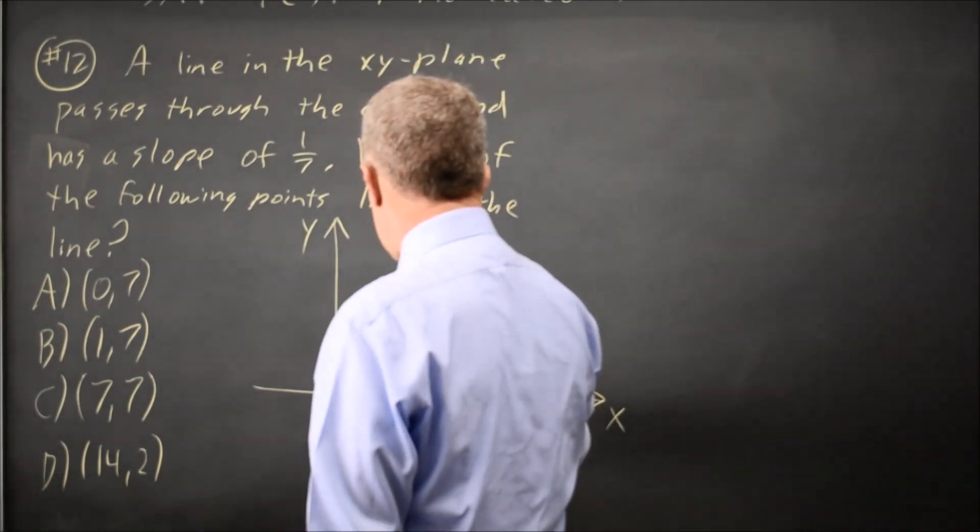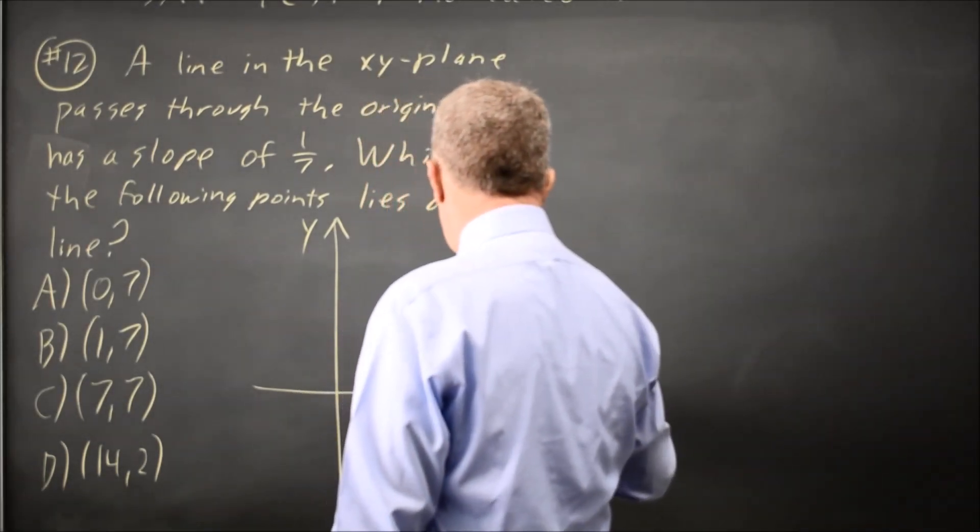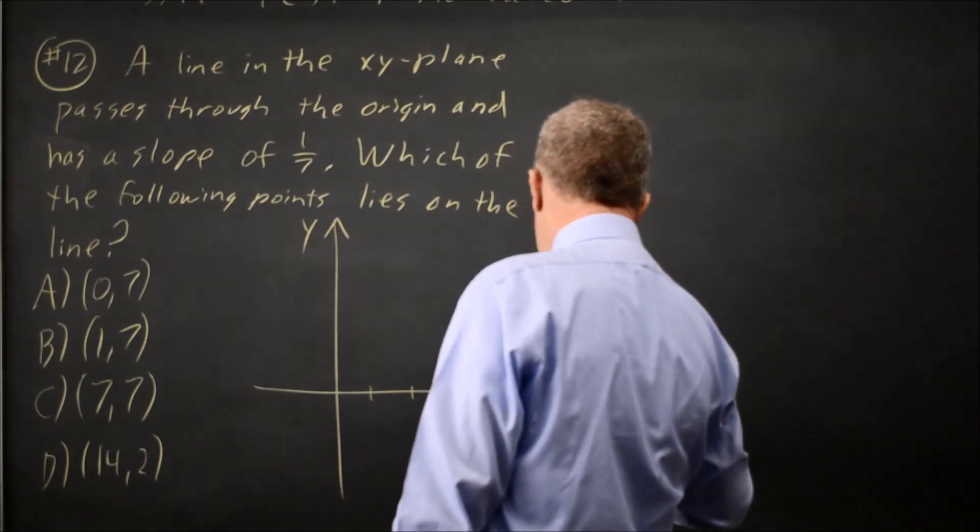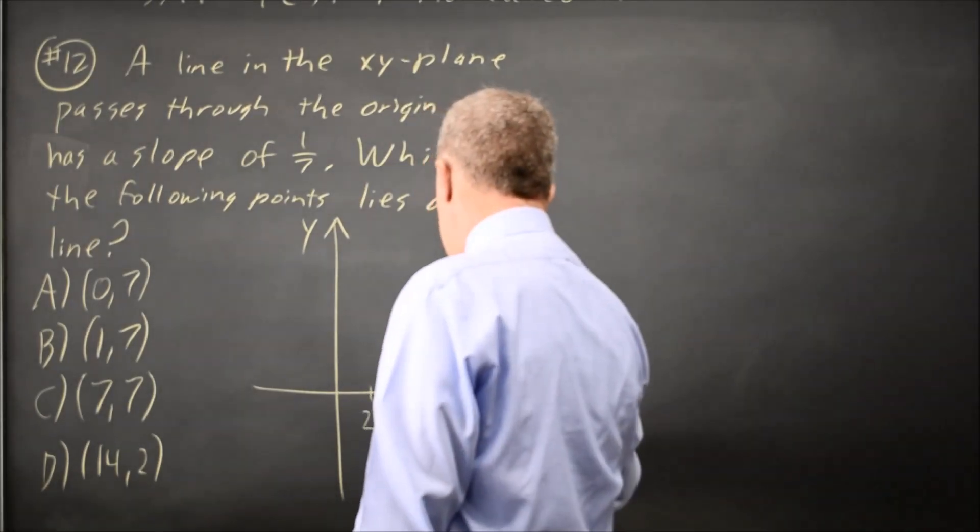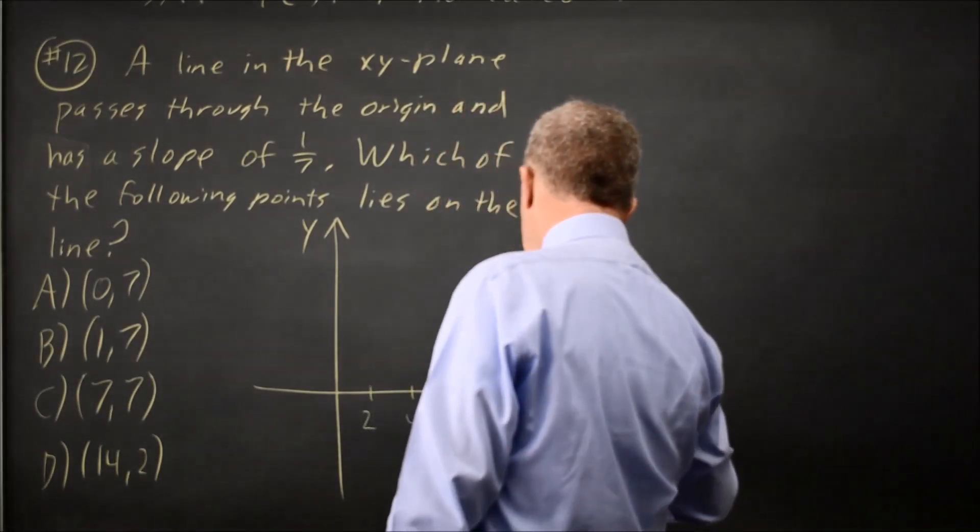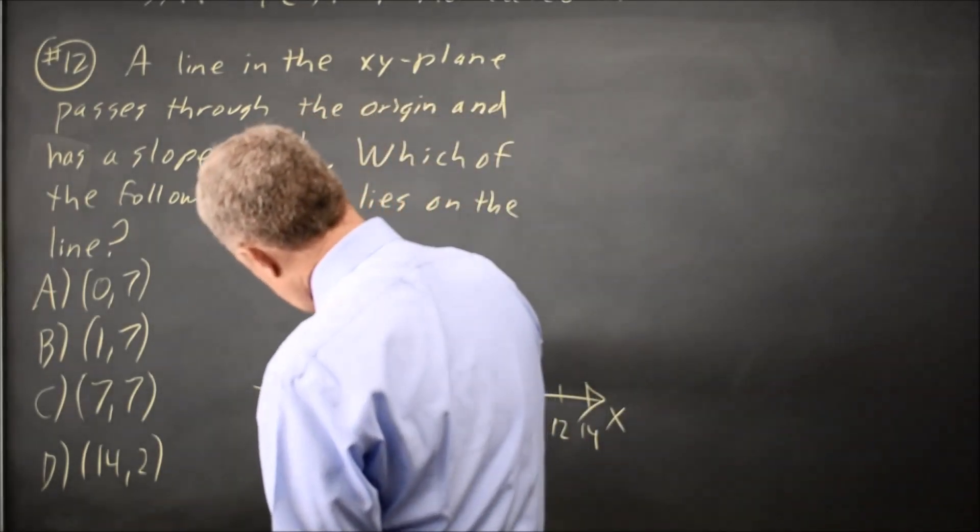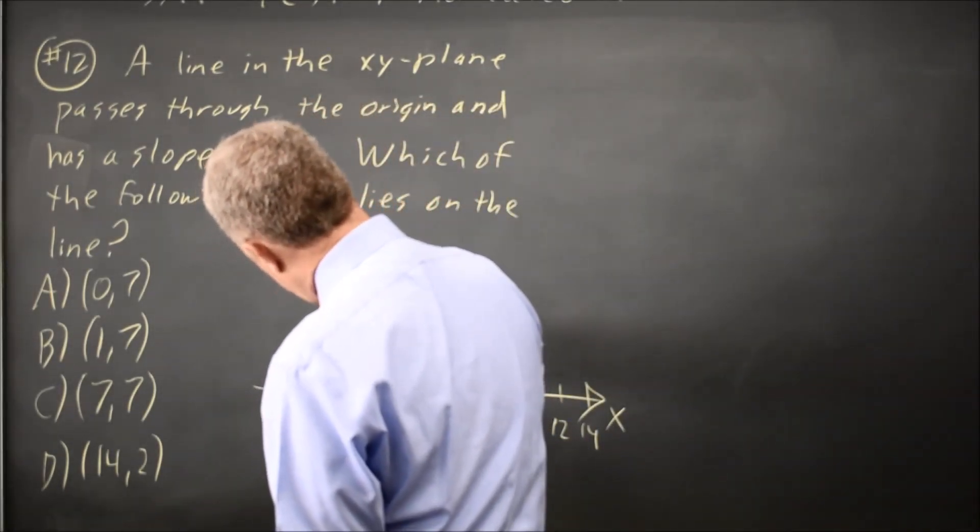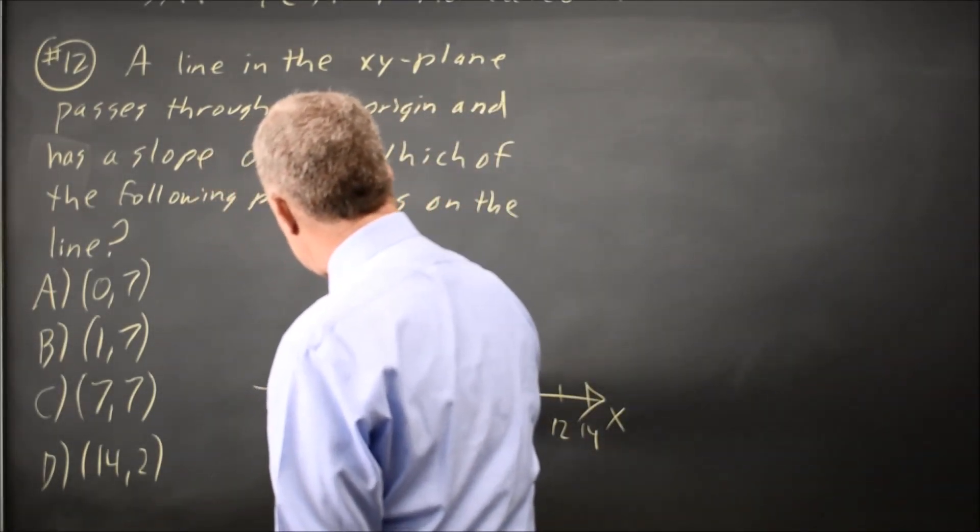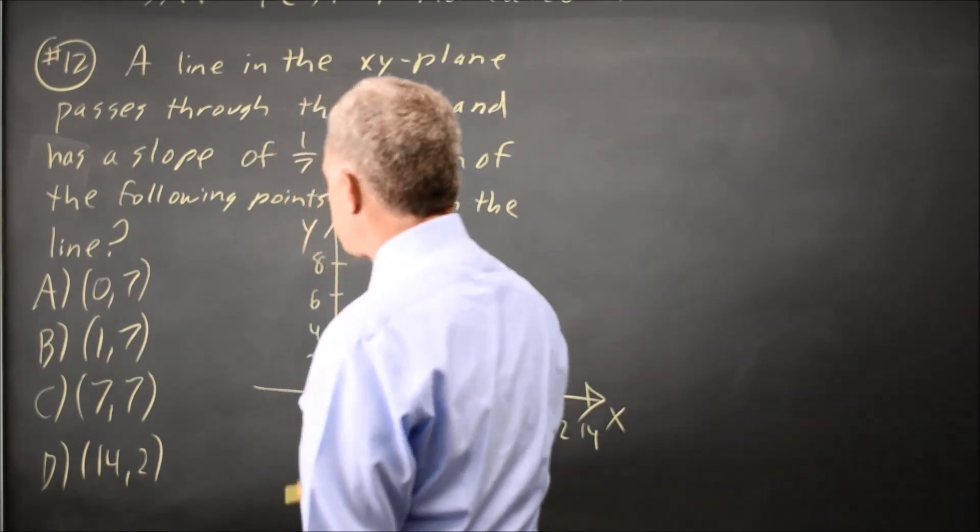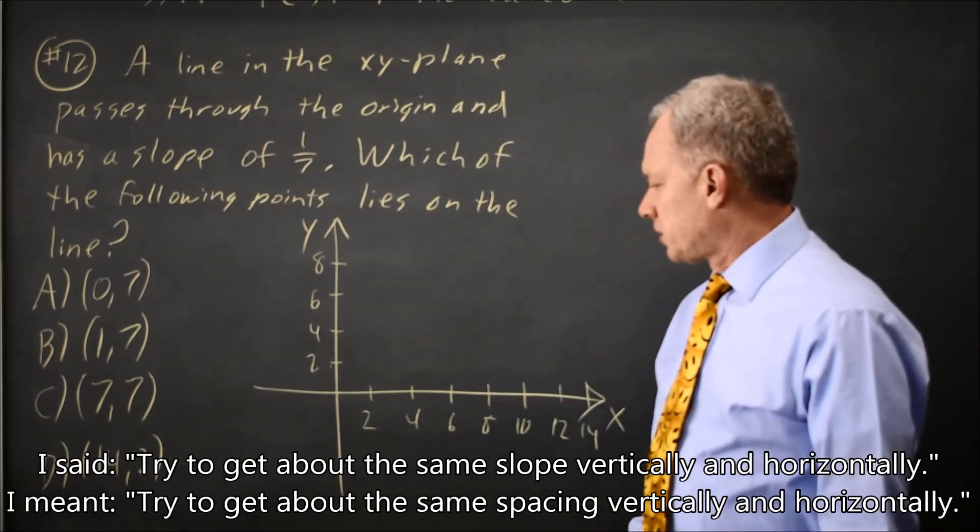So if I look at 2, 4, 6, 8, 10, 12, 14, and 2, 4, 6, 8, trying to get about the same scale vertically and horizontally.